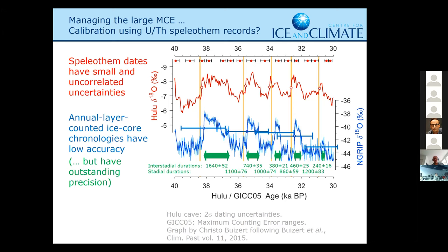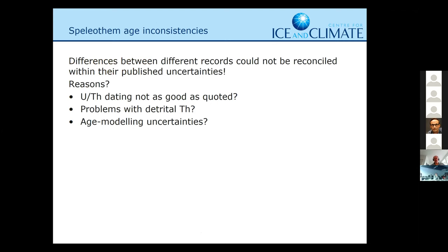In the strict INTIMATE way, we want to avoid correlating records that we don't know show the same climate signal. As many of you old INTIMATEs know, we have been discussing this fiercely in many meetings. What is the likely lag of the climate system? When we see a DO event in one record, how much of an assumption is it to say it's the same thing going on in another record? One big problem is that if you take different speleothem records, you actually get different results — so Hulu gives one answer, but other speleothem records do not give the same agreement. Maybe the uranium-thorium dating is not as good as quoted.